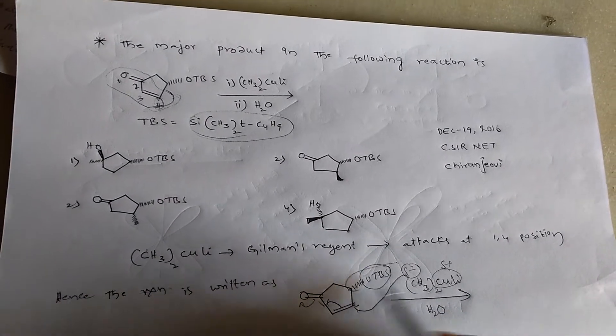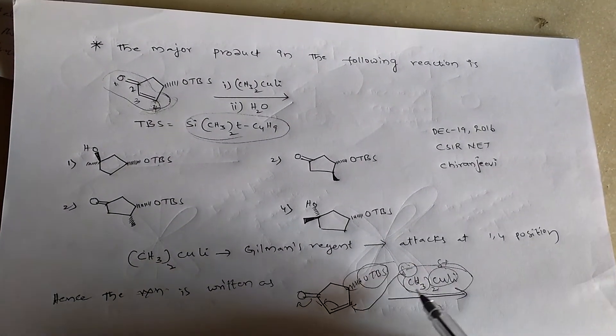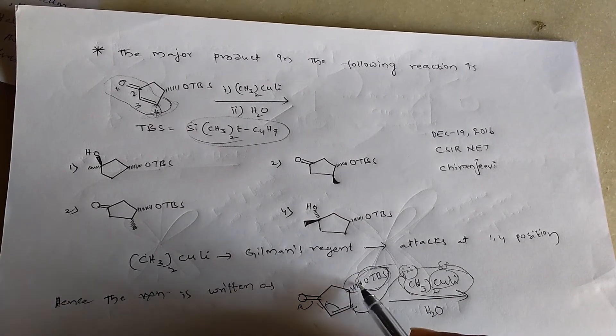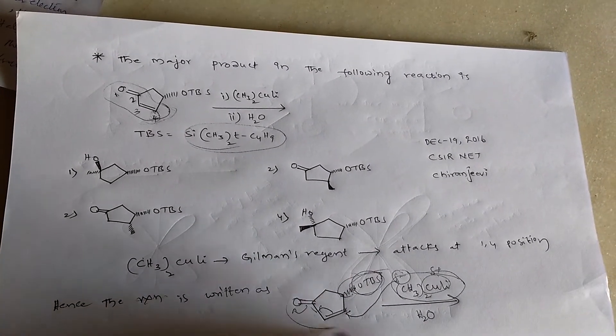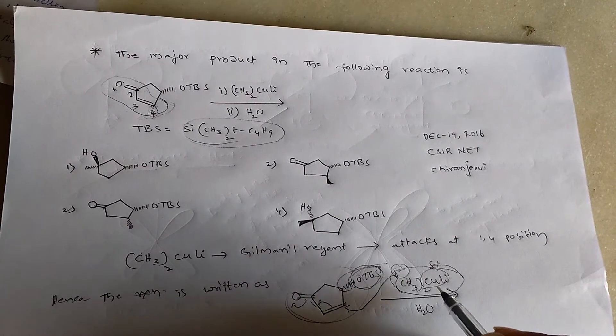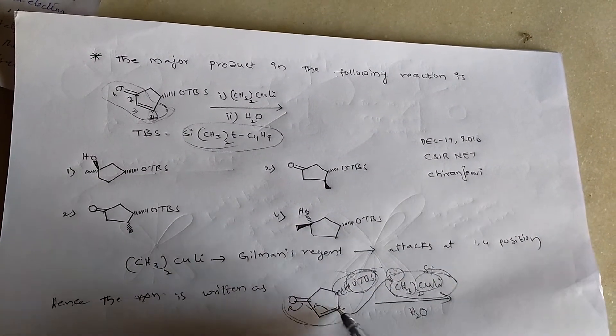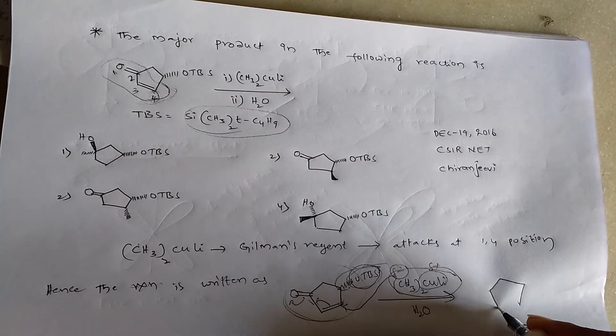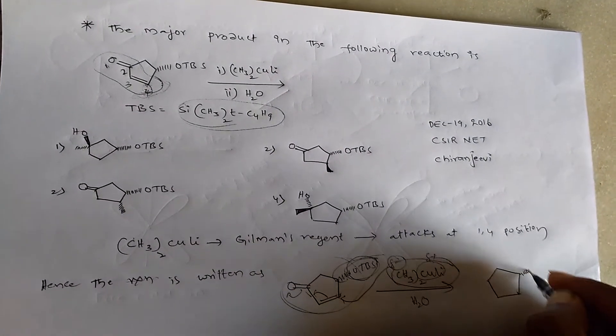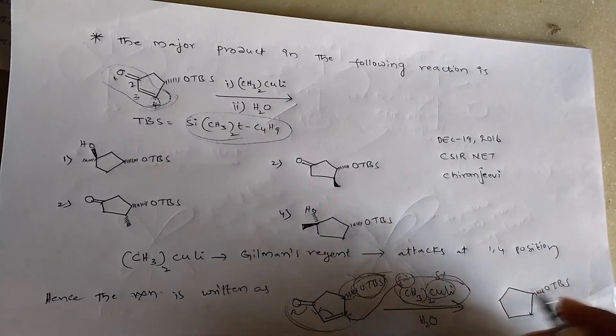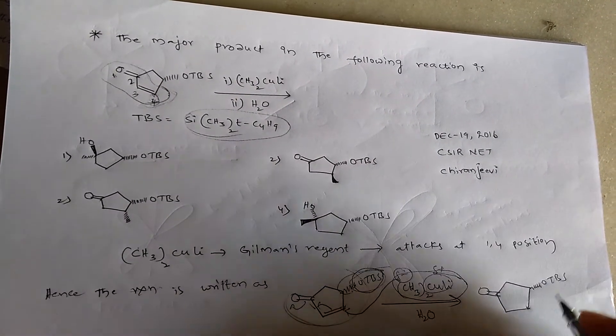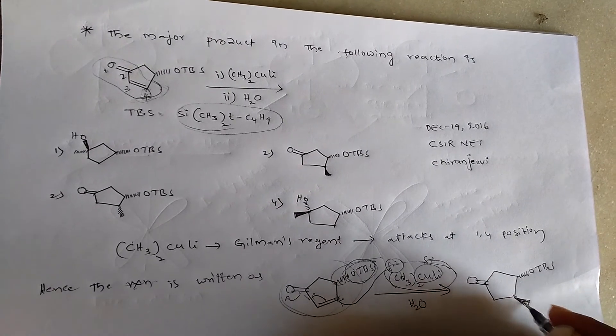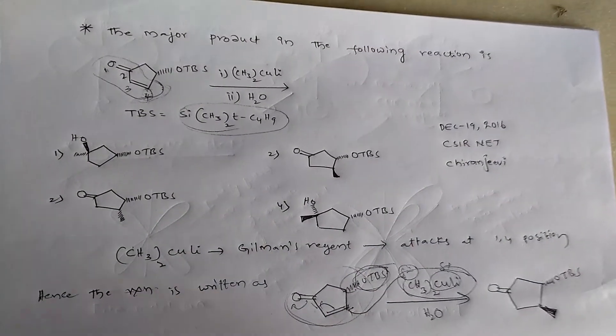So, Gilman's reagent is also bulky group. That's why it attacks from the, TBS, OTBS is below to the molecule compound and then this Gilman's reagent attacks from the above. That's why we can get, so this is the product.